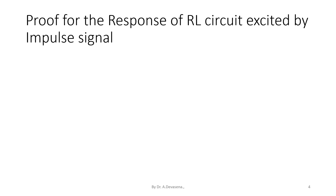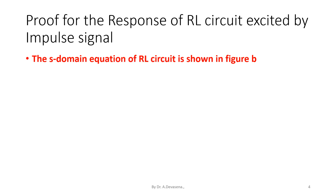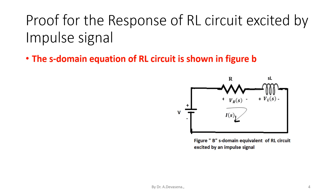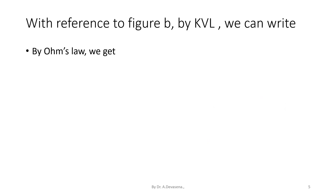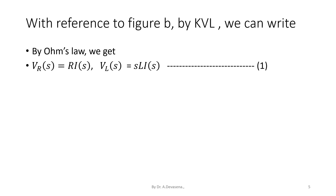Let us see the proof for the response of RL circuit excited by an impulse signal. The S-domain equivalent of RL circuit is shown in figure B. Let Laplace of i of t equal capital I of s. Laplace of V suffix R of t equals capital V suffix R of s. Laplace of V suffix L of t equals capital V suffix L of s. Laplace of delta V of t equals capital V. Capital V suffix R of s equals R into I of s, and Laplace of V suffix L of s equals S L into I of s. Consider this as equation 1.